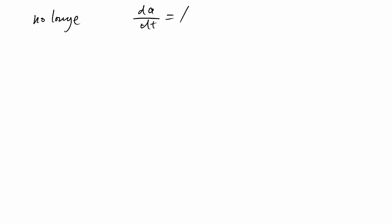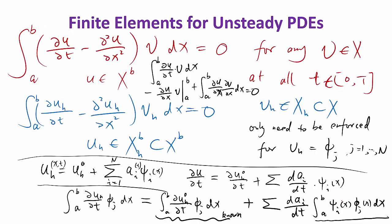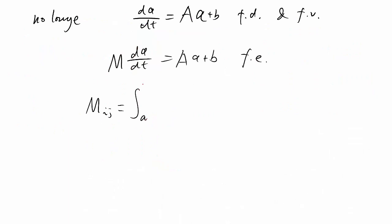Our discretization is no longer simply d a dt equals A times a, as in finite difference and finite volume. Instead we have M times d a dt equals A times a plus b. This is what we have in finite element. The mass matrix M_ij is the integral of phi_i times phi_j dx. In the Galerkin method, M_ij equals the integral of phi_i phi_j dx — it is a symmetric matrix.